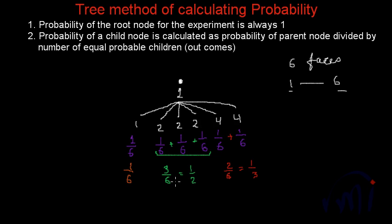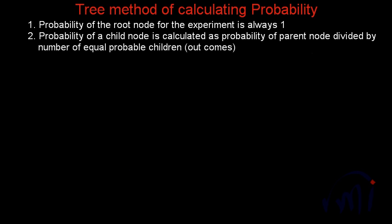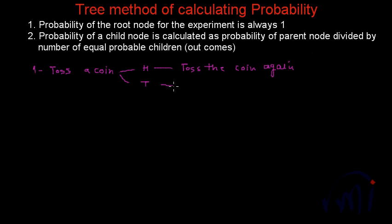So this is the way you calculate the probability when the dice is not fair. Now we have one more example where we are going to roll a dice and also toss a coin. The question is: first toss a coin; if you get a head, toss the coin again; if you get a tails, roll a dice. This is the scenario and we have to calculate the probability of all the nodes.